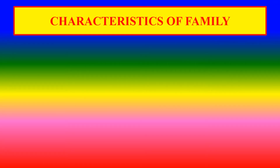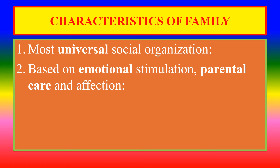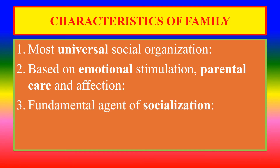Characteristics of family — first: family is the most universal social organization, the only truly universal one compared to other institutions. Second: family is based on emotional stimulation, including parental care and affection. Third: family is the fundamental agent of socialization — socialization begins within the family.